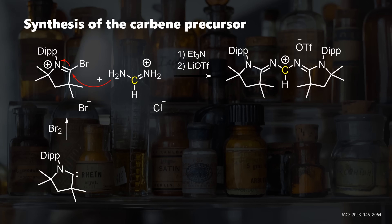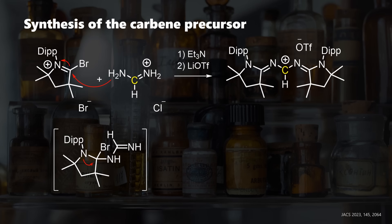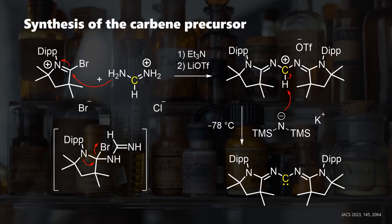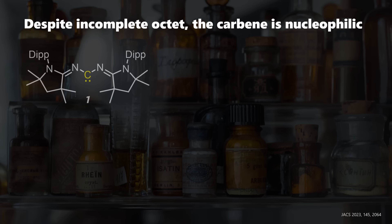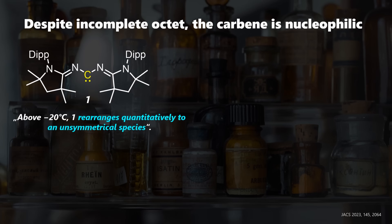By adding formamidine and base, we get an intermediary cationic dimer through nucleophilic attack and elimination of bromide. After an anion switch to the triflate, strong base can deprotonate the central carbon, giving the carbene. This compound has several insightful features.